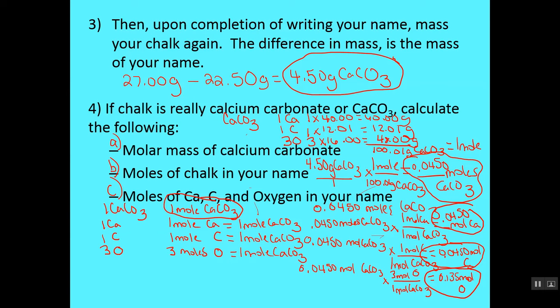So, for 0.045 moles of calcium carbonate, we have the same moles of calcium, the same moles of carbon, and three times as many, right? So, 0.135 moles of oxygen. That's what your work should look like to get you moles of each of those substances in that compound.